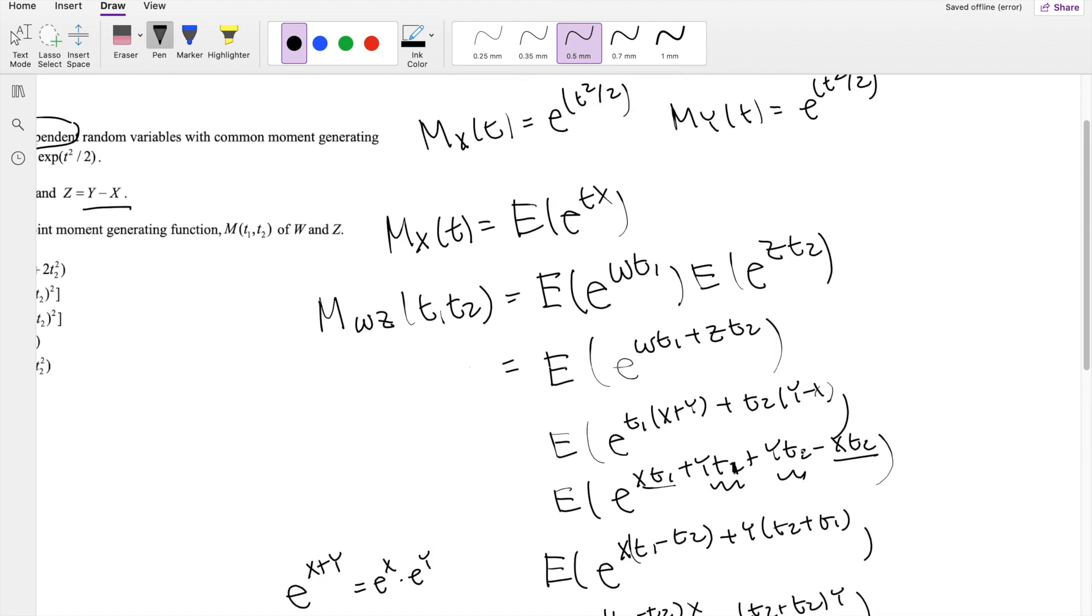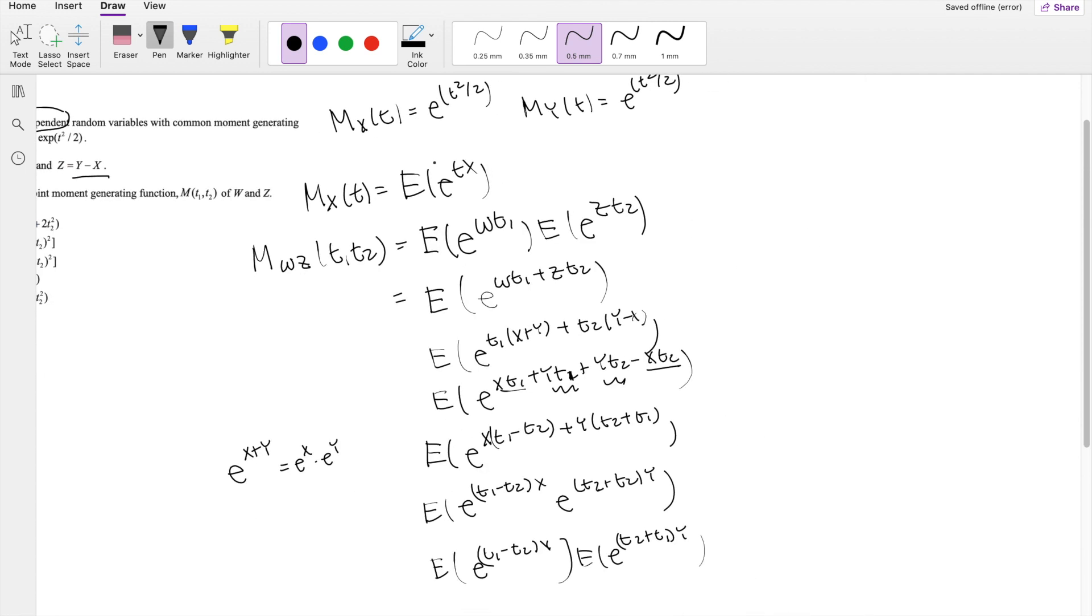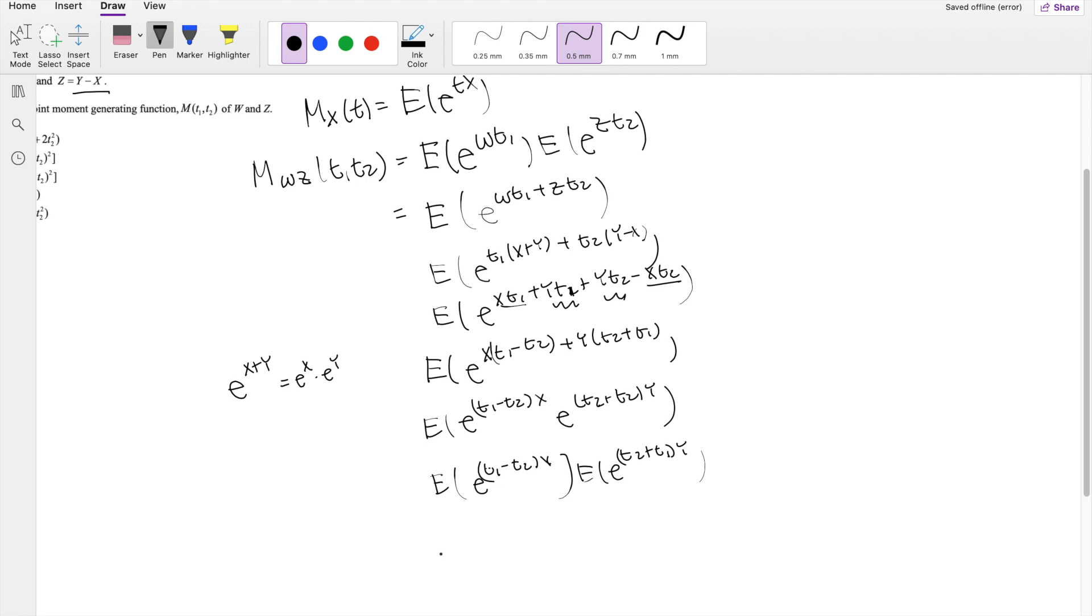Okay, now basically, it follows this formula, right? This formula, where T in our case, right, will just be this value here, T1 minus T2 for X. So then this is equal to, just plugging T1 minus T2 for the value of T,